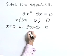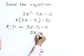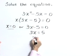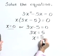So x is either equal to 0, or solving this linear piece for x, 3x is 5, x is 5 thirds.